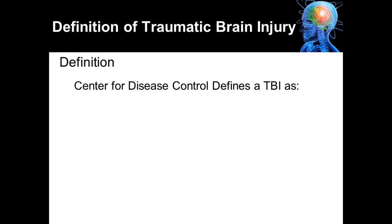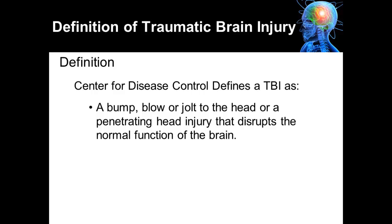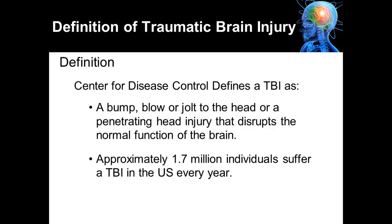There are a variety of definitions for traumatic brain injury. I've selected the Center for Disease Control definition of traumatic brain injury, which is a bump, blow, or jolt to the head, or a penetrating injury that disrupts the normal function of the brain. This is a very common injury, and approximately 1.7 million individuals suffer a traumatic brain injury in the United States every year.